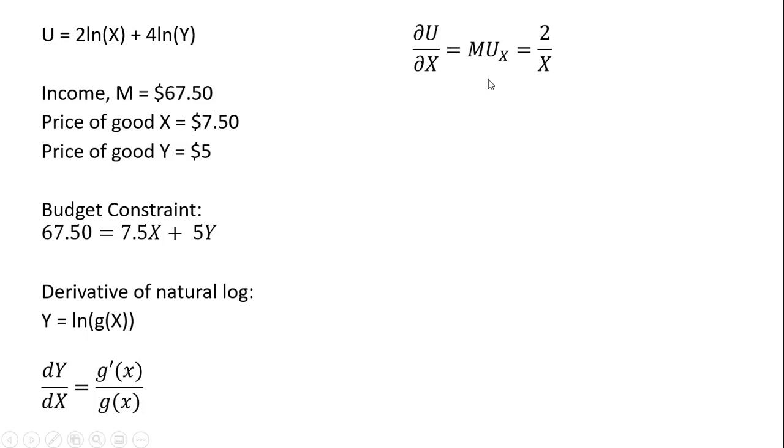So to get the marginal utility of good X, we're going to just follow this rule. What's in parentheses, we move that down to the denominator.